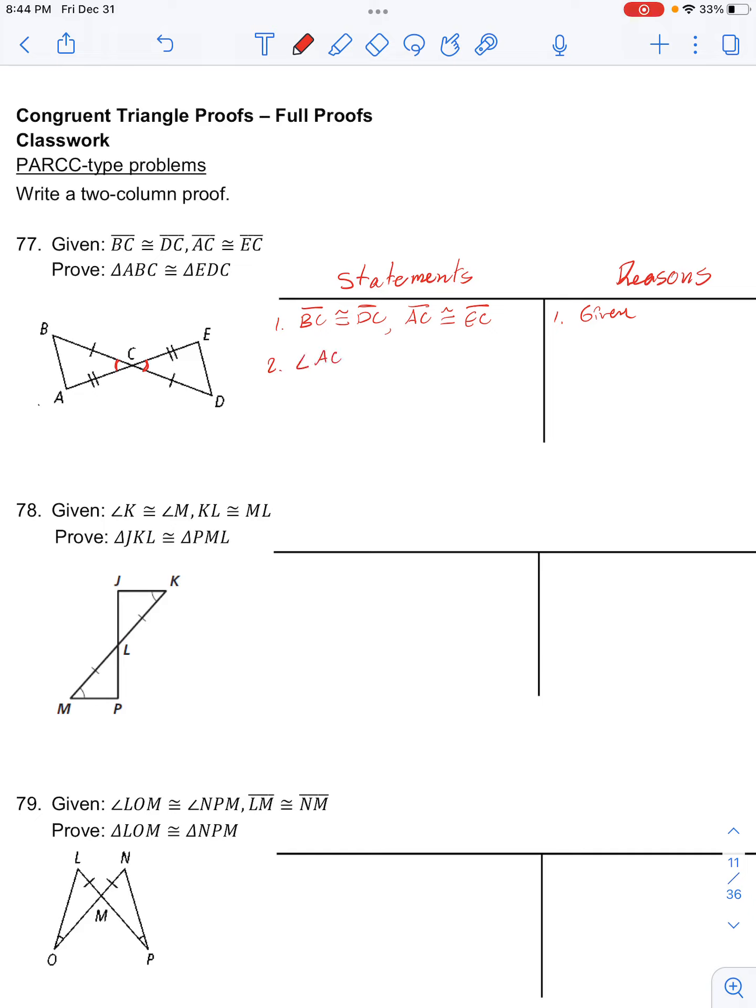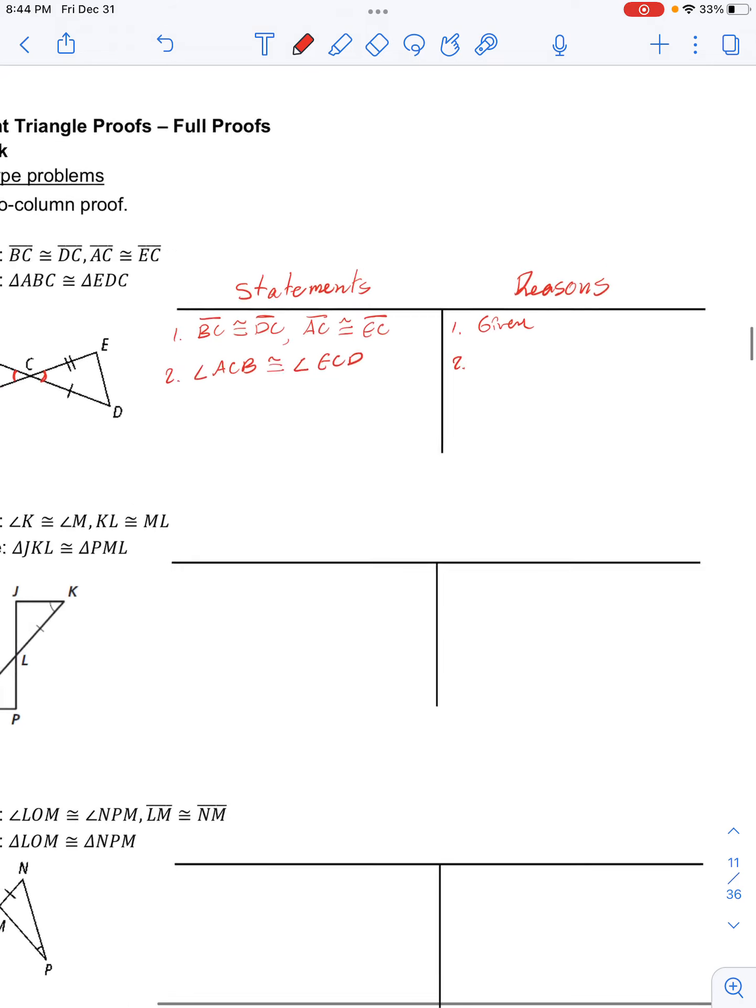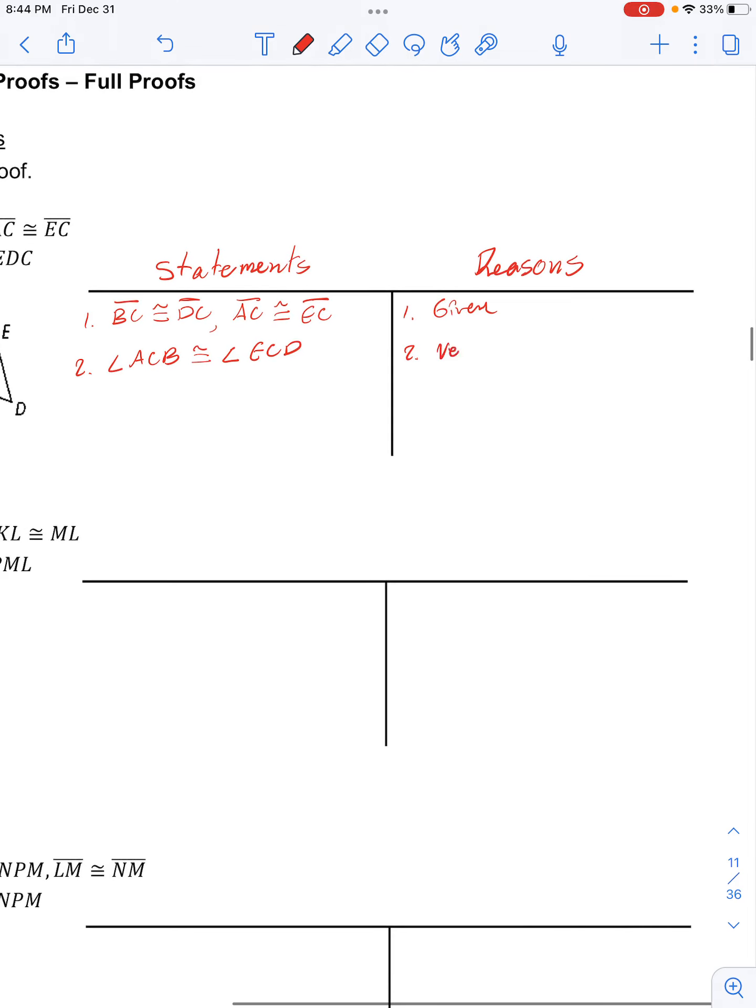So we have angle ACB is congruent to angle ECD, and this is because vertical angles are congruent.